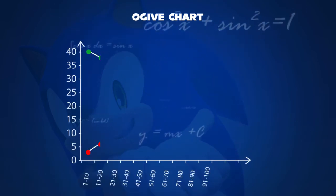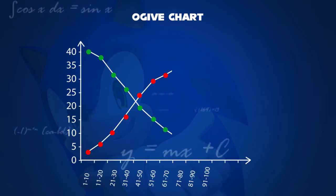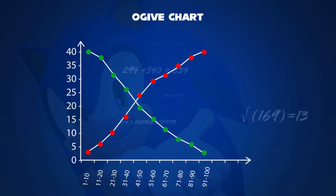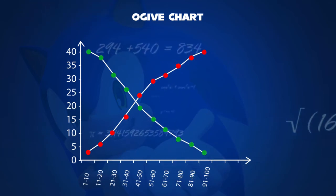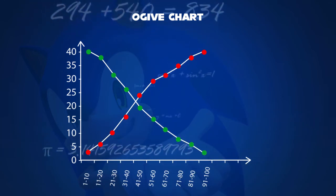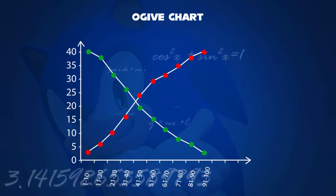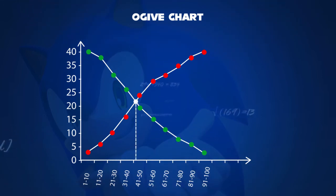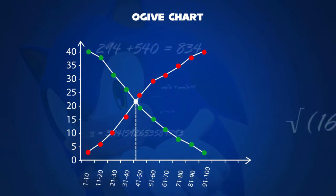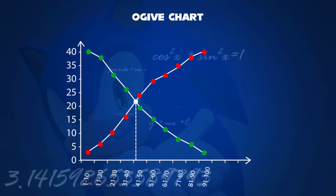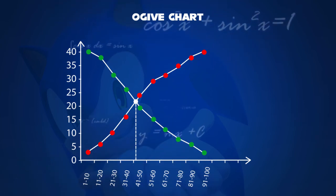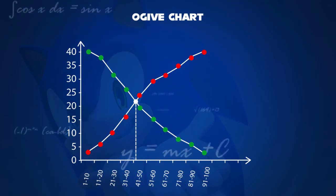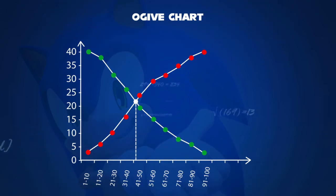When you draw a graph of ogive curves, you'll notice that one curve goes up and the other goes downwards according to the cumulative frequency. What you have obtained is an intersected point called its median, which lets you find the average score of some students. This must give an approximate value when two curves intersect.